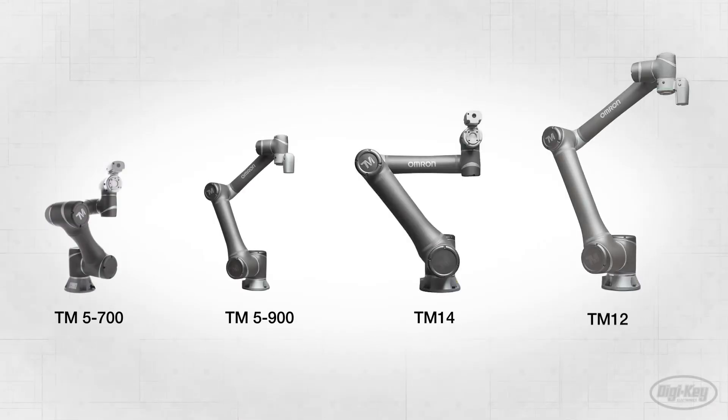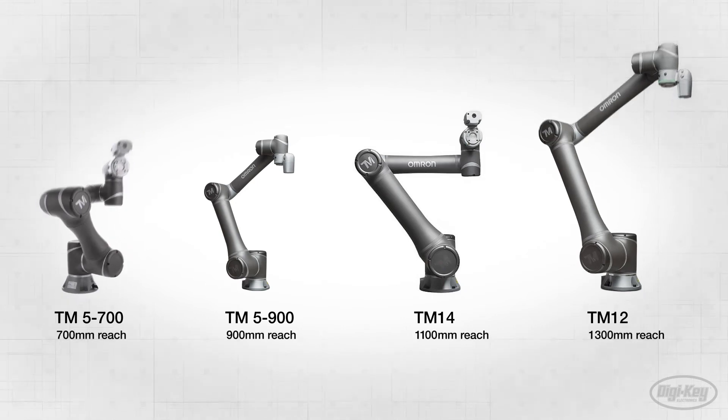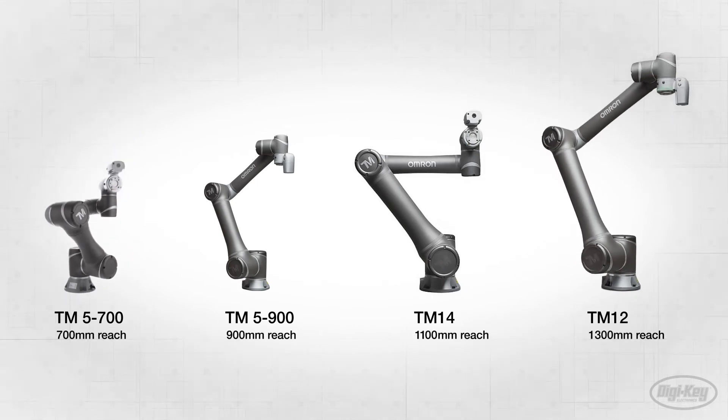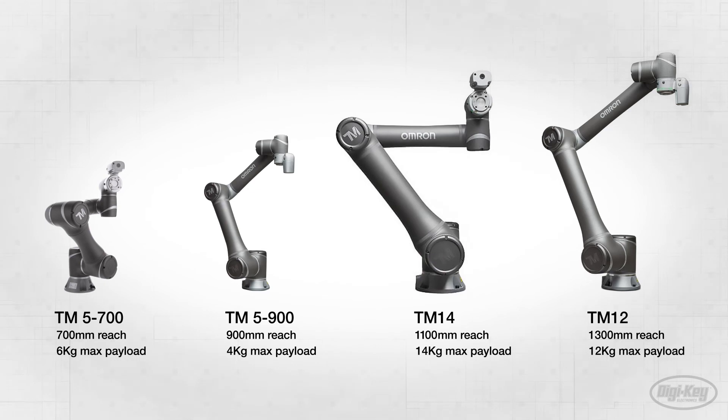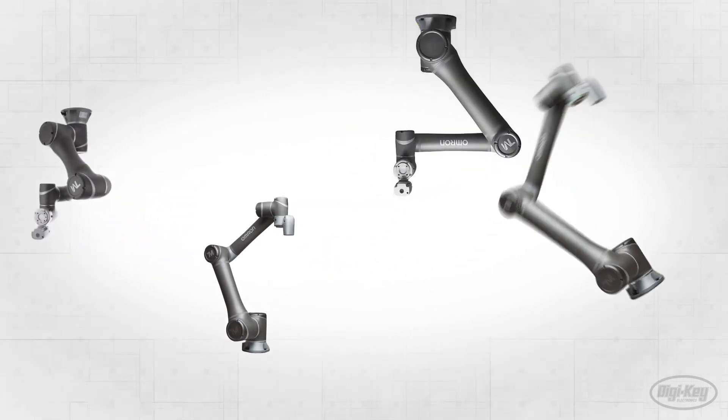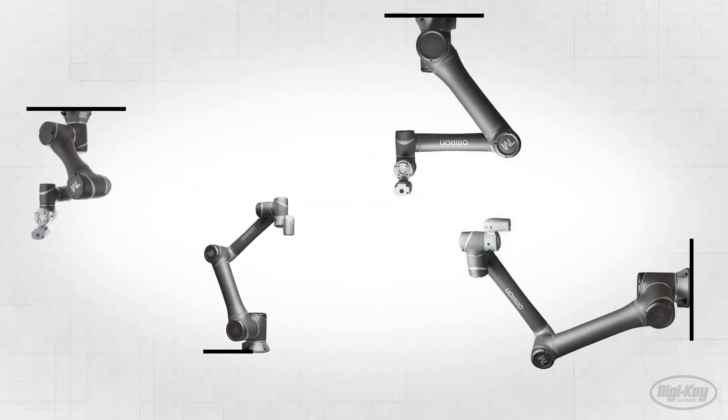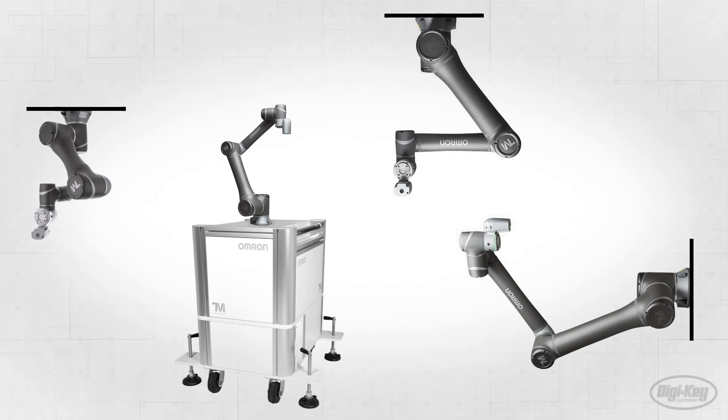Omron's TM series is available in multiple configurations, with reach ranging from 700 to 1,300 millimeters and a maximum payload up to 14 kilograms. The co-bots can be mounted at any angle and inverted, or on a mobile workstation for easier movement.